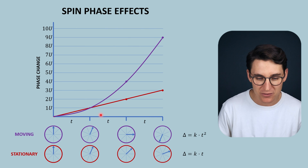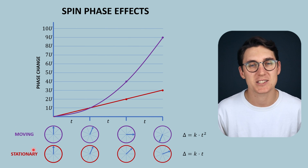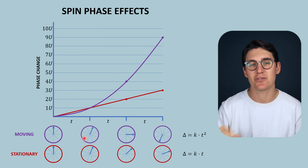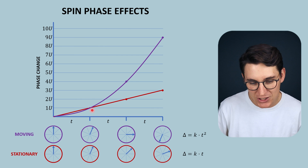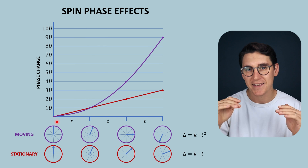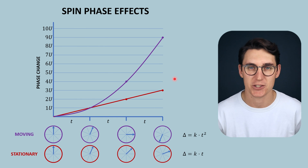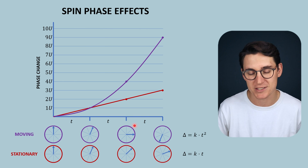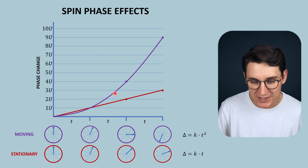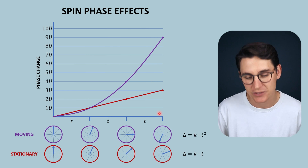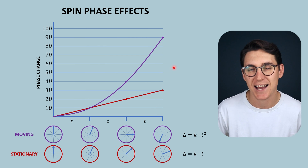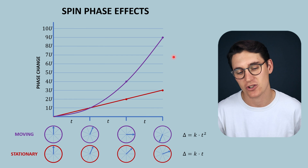As a reminder, spin phase effects occur differently between moving spins and stationary spins. When stationary spins experience a magnetic field gradient, the phase change occurs in a linear fashion — for each unit of time that we apply the gradient, we get a unit of phase change. Moving spins traveling at a constant velocity parallel to that gradient will get incrementally more and more phase change for each unit of time, and it's this phase change difference that allows us to create a phase contrast MRA.